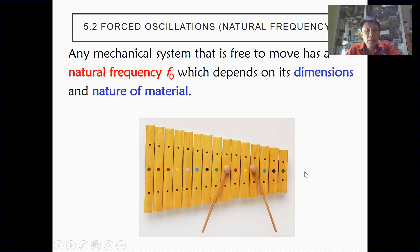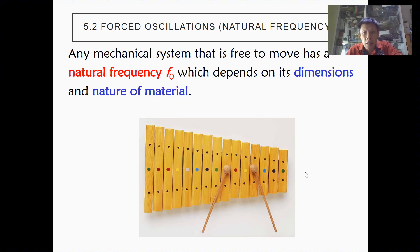For any mechanical system, there exists a natural frequency. This natural frequency depends on the material as well as its dimensions. For example, for this musical instrument, because the dimensions of each piece are different, as you strike each piece the tone or frequency — the pitch — will be different, because the pitch depends on the natural frequency of each piece.